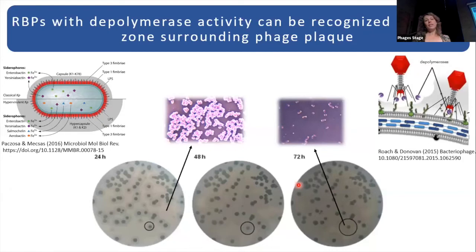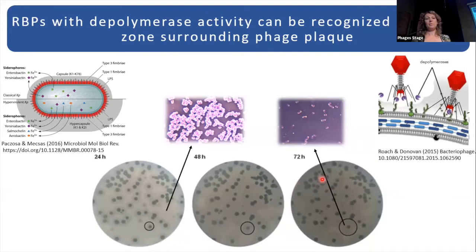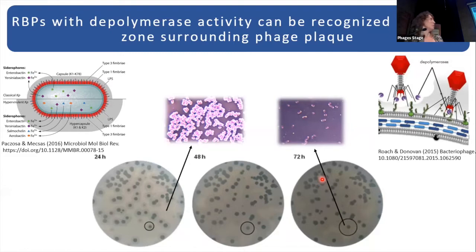Receptor binding proteins, RBPs, as you probably all know, can have the form of tail fibers or tail spikes. Tail spikes normally have enzymatic activity. The focus of this project is on RBPs with depolymerizing activity, but I will shortly just call them RBPs, meaning those with depolymerizing activity.